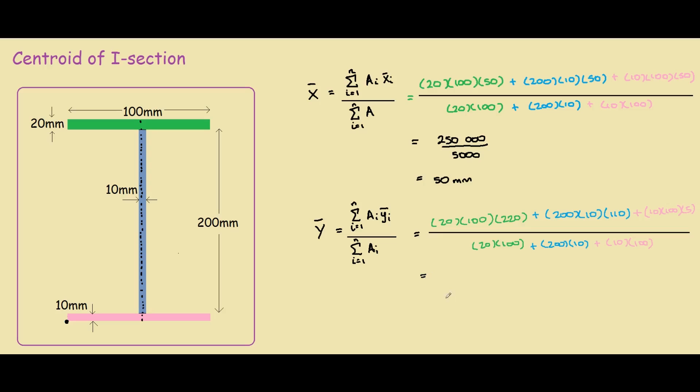This would equal 665,000 divided by 5,000. So our y-centroid is 133mm, and as expected, it's higher up. The centroid of this whole I-beam is 50mm here, and then you go up 133, so it would be somewhere here approximately.